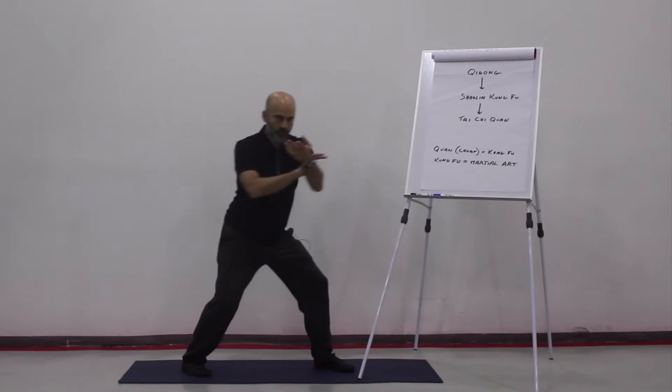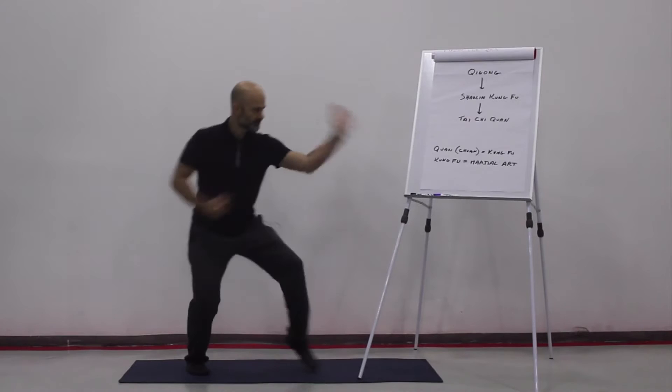So with Tai Chi, we're used to seeing these very fluid movements, right? With Shaolin Kung Fu, the movements are just sharper. Does that make sense?